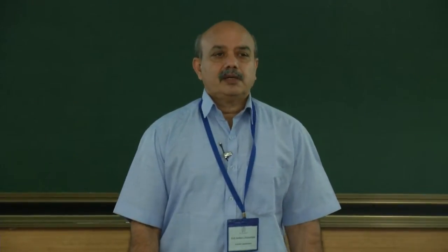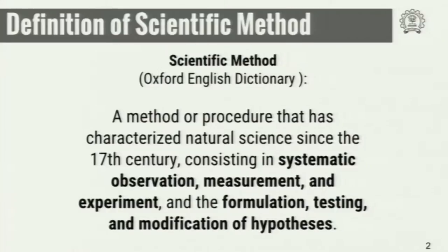If I go back and look at the definition of what is a scientific method in the Oxford English Dictionary, we find this one-line sentence, very loaded. It tries to give you a gist of what is the scientific method. A method or procedure that has characterized natural science since the 17th century. This consists of two things: one is systematic observation, measurement and experiment. The word 'systematic' is very, very important, which means somebody else can follow the same system and verify, validate the results.